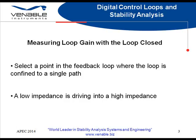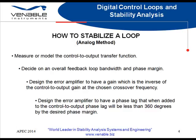We have a basic procedure for stabilizing a loop for an analog system as follows. First, we measure or model the transfer function of the modulator section of the power supply. Then, we choose what we want the feedback loop bandwidth and phase margin to be. Finally, we design an error amplifier that will provide us a gain that is the inverse of the control-to-output gain at the chosen crossover frequency and has a phase lag that, when added to the control-to-output phase lag, will be less than 360 degrees by the desired phase margin.